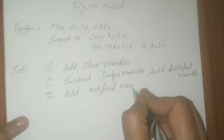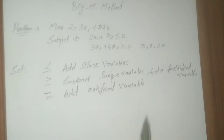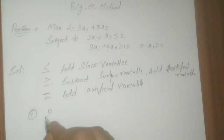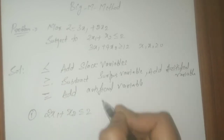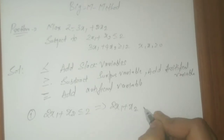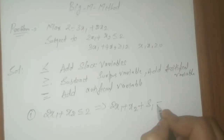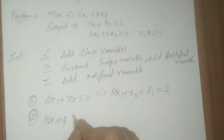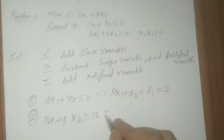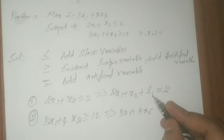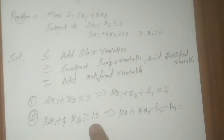We have less than and greater than types in our constraints. For the first constraint, 2x1 plus x2 less than or equal to 2 — since it is less than or equal to, adding one slack variable s1 converts the inequality to equality. For the second constraint, 3x1 plus 4x2 greater than or equal to 12 — since it is greater than, subtract surplus variable s2 and add artificial variable a1, changing the inequality to equality form: equals 12. That's your first step.